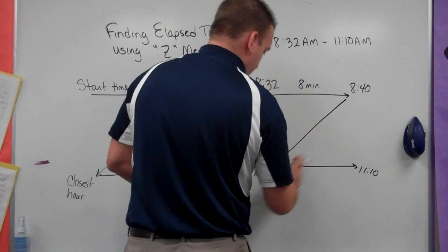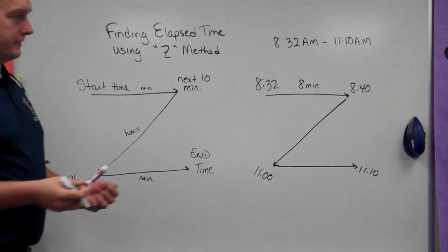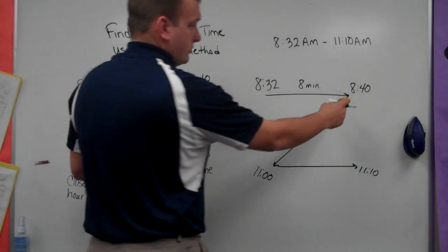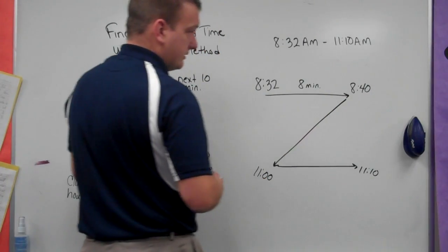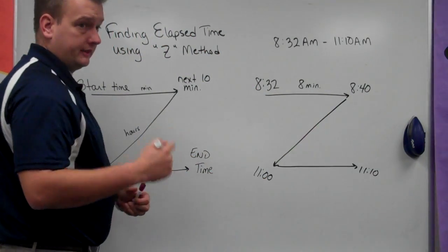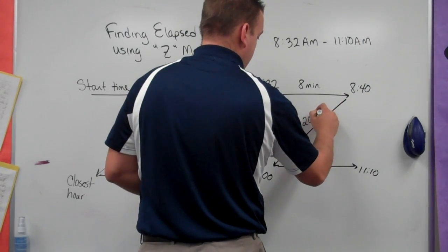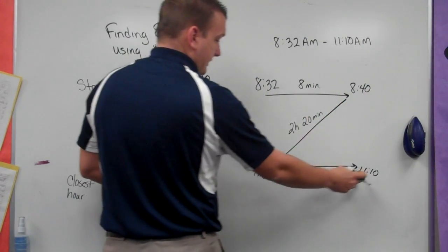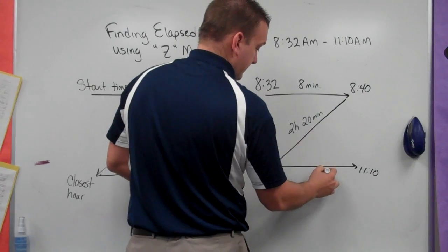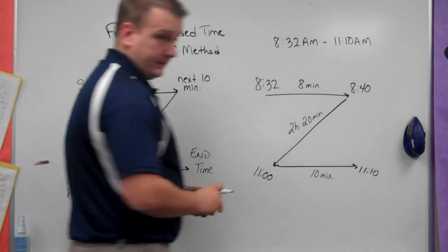Now, from 8:40 to 11, I have to think in my mind I want to go to the next hour, which would be 9 o'clock, but I can't forget the 20 minutes that are there. 9 o'clock to 11 o'clock, that's two hours plus my 20 minutes. Then, I have from 11 to 11:10, that's 10 more minutes.